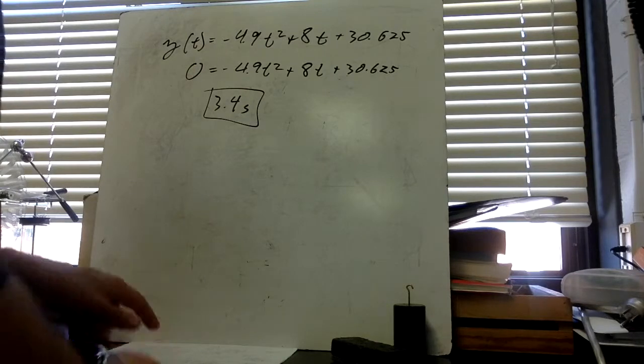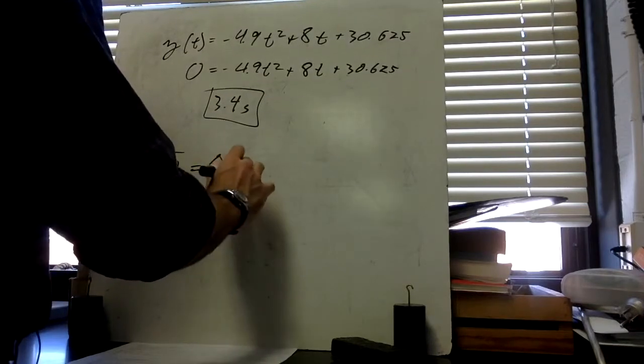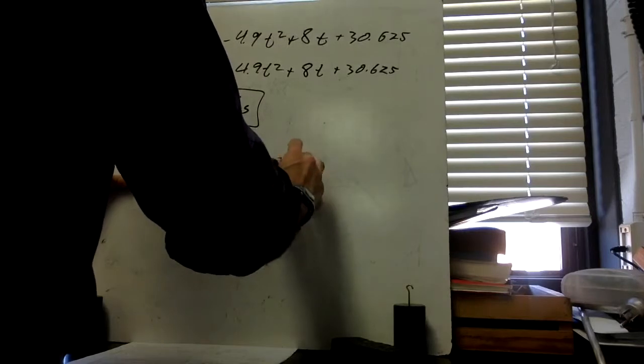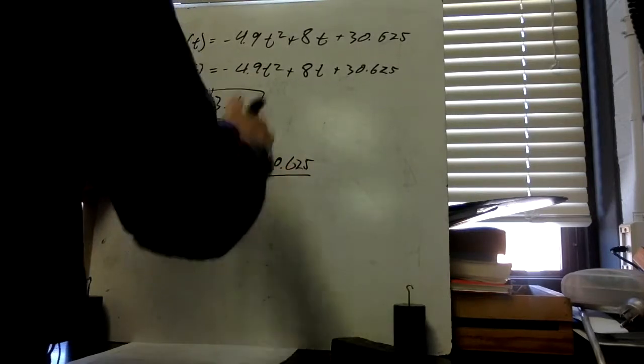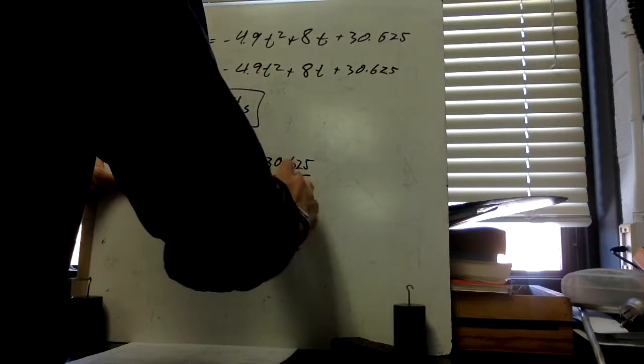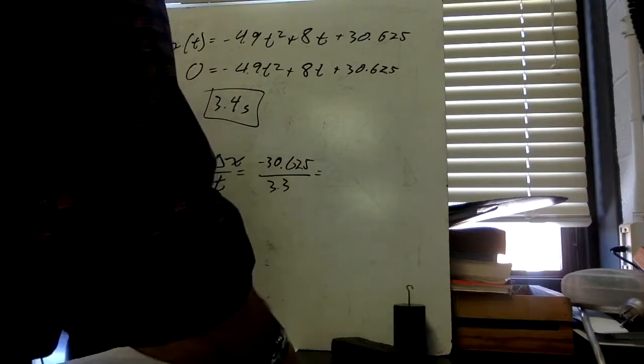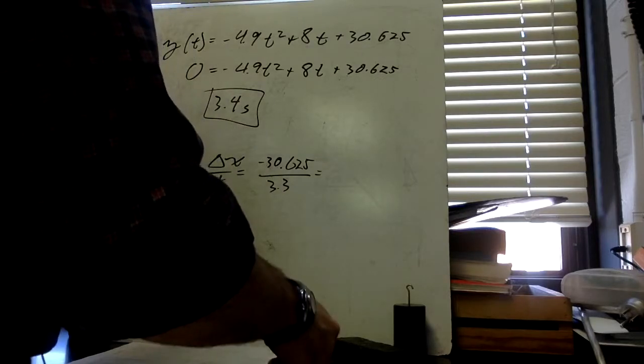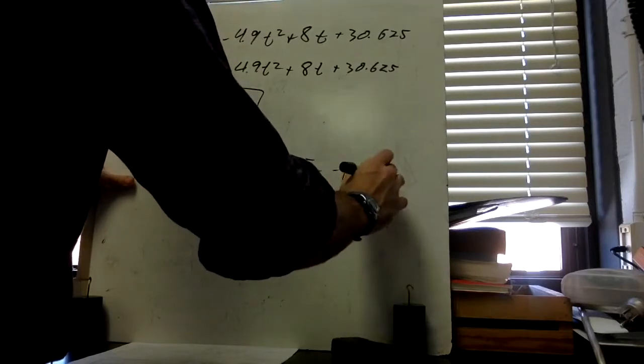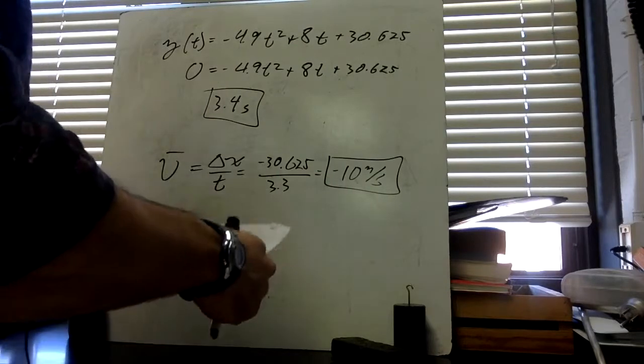And for question F, the average velocity, V, is delta x over t. And what is delta x? Well, it's -30.625 because that's how far it fell, divided by a time of about 3.3 or 3.4 seconds. If you use 3.3, then you get about negative 10 or so, doing some rounding. And rounding is okay. Rounding is actually probably better than you think.